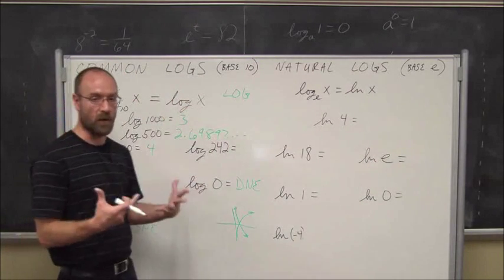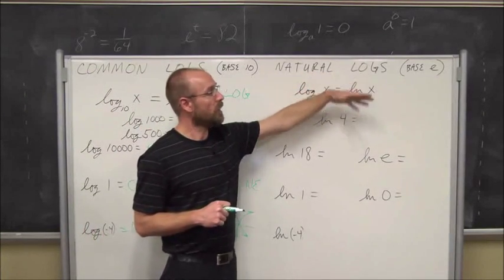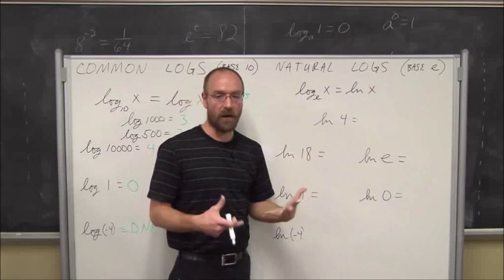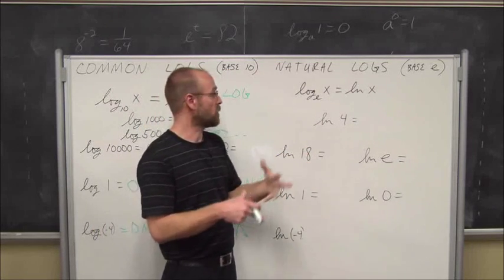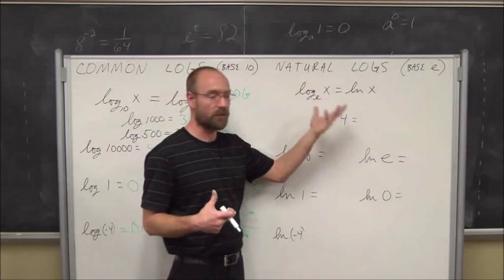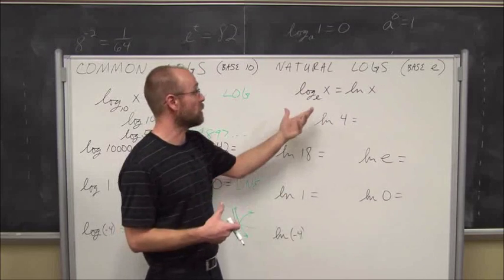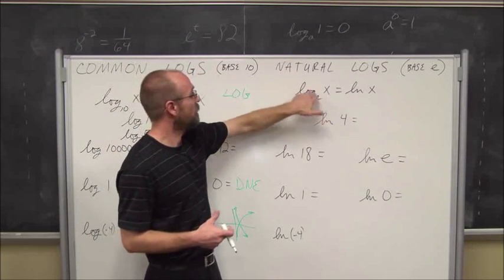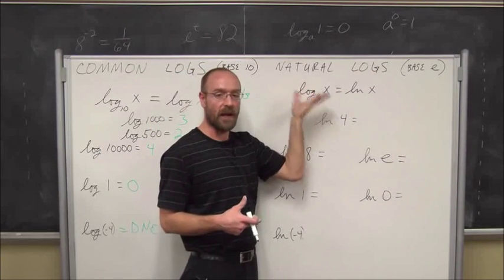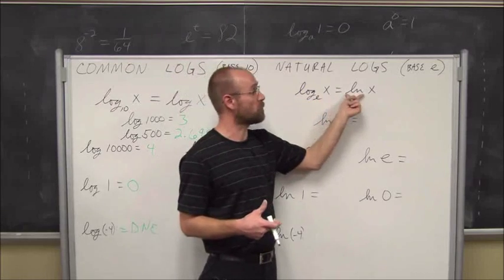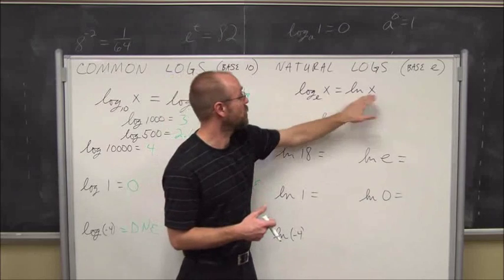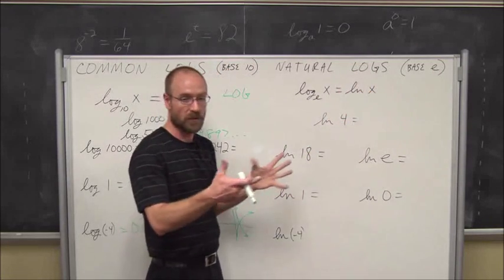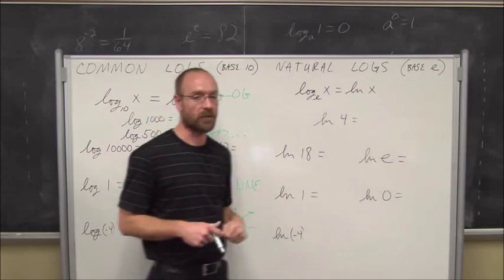So that's base 10. Now we have the natural log. In the previous video, we introduced the natural number e. It's a common log used in population growth, certain decays, bacteria, biology, physics, and economics — like interest. We have log base e of x, which is called the natural log or log natural, abbreviated Ln. When we see Ln, we know the base is e, which is approximately 2.71828 — an irrational number like pi. We use the symbol e to represent that value.